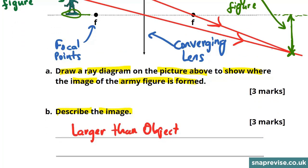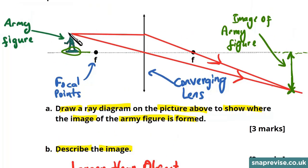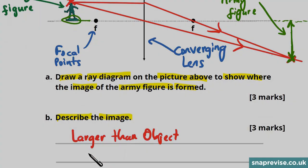Next we want to know if the image is upright or inverted. Well we can see that the top of the object actually gets put in the bottom of the image. So we can see that our image is actually inverted.